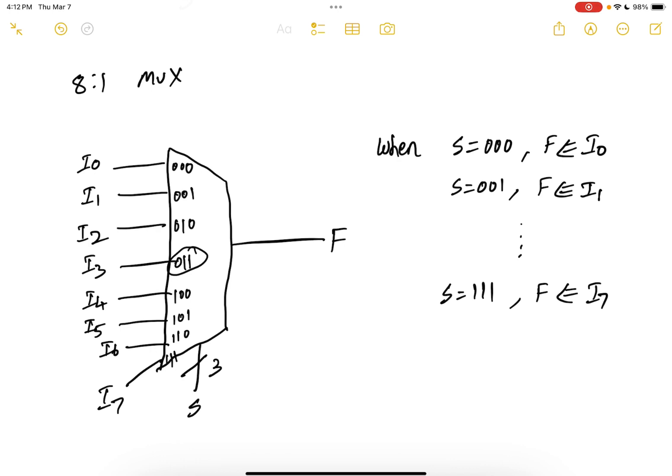Similarly, you can have a 16 to 1 MUX, 32 to 1 MUX, 64 to 1 MUX, 128 to 1 MUX and so on.